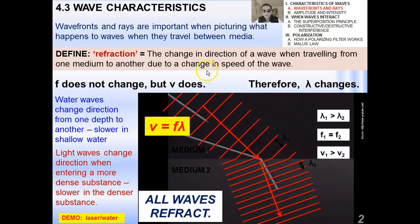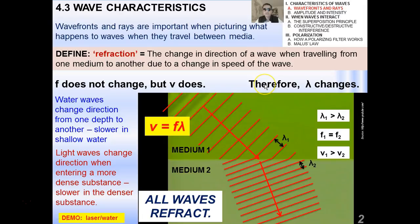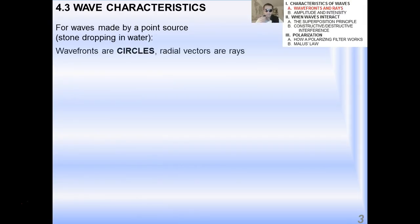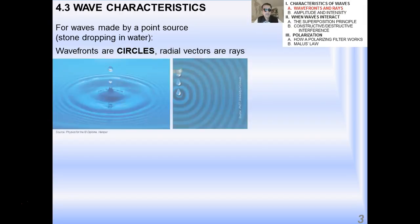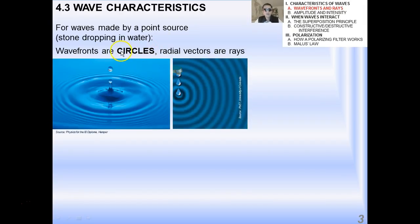You're going to want to refer back to this really nice diagram and this really nice little GIF movie from time to time, especially also in the next topic, 4.4, where we're going to study Snell's Law in a little more detail. Now, for waves that are made by a point source, so if you think about, like, for example, a stone dropping in water or a dripping faucet into a sink, the wavefronts are actually circles. And the radial vectors are then called rays, right? So, same idea, right?